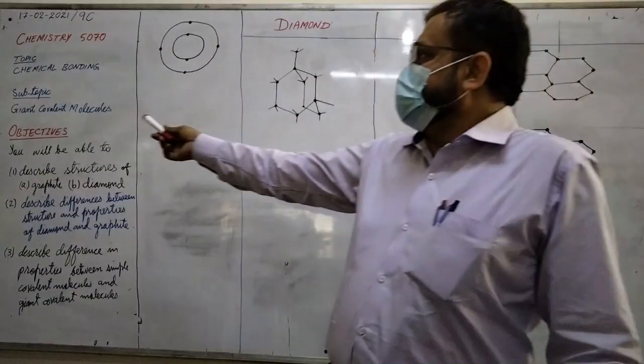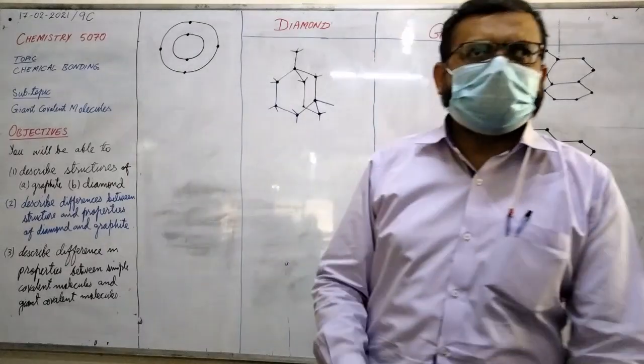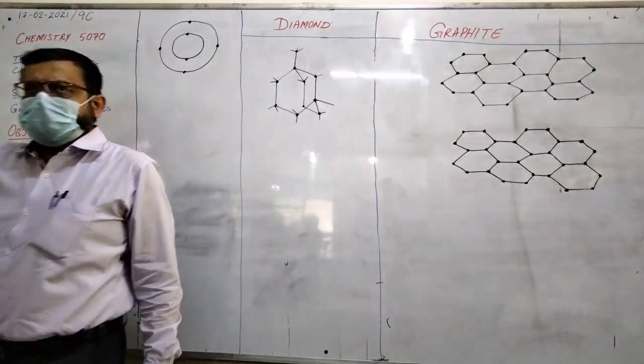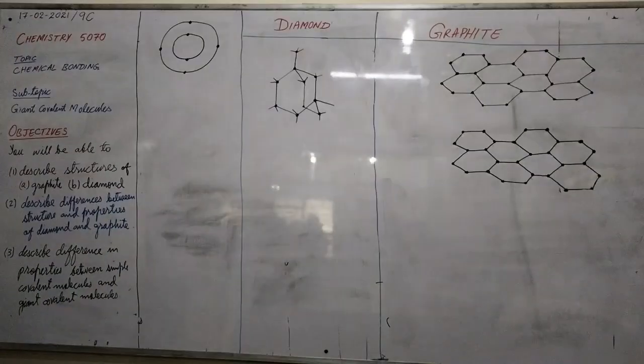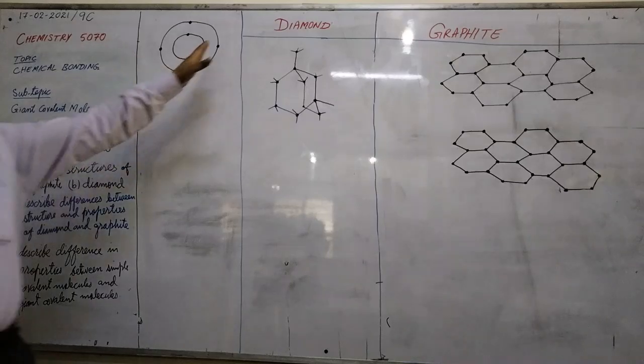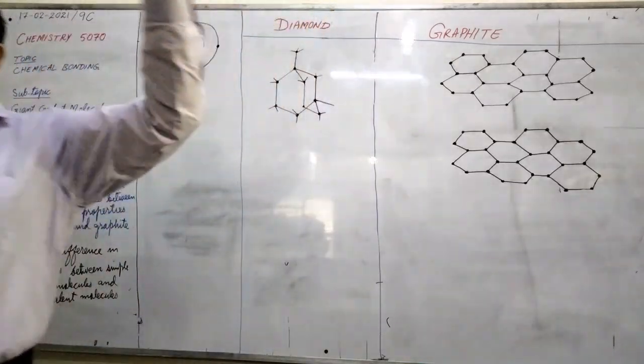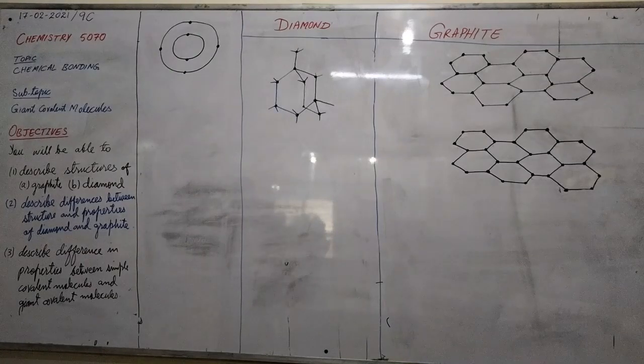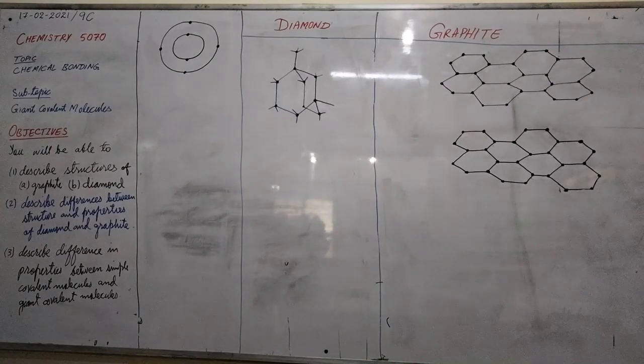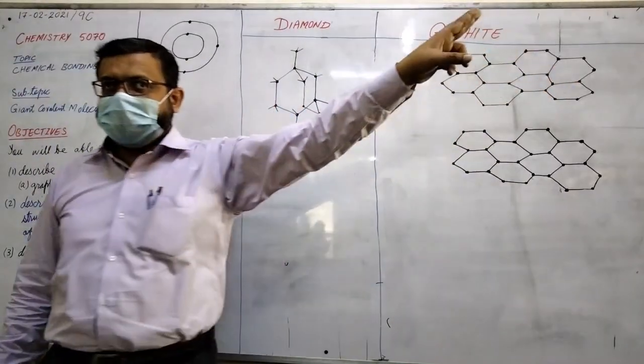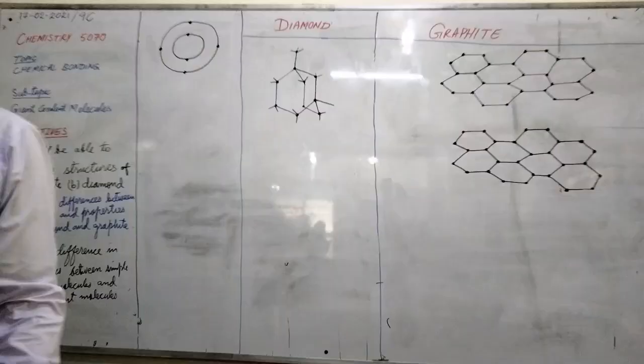Today our topic is Giant Covalent Molecules, and the subtopic is Giant Covalent Molecules. Our main topic is Covalent Bonding, as we are learning since two weeks. In Giant Covalent Molecules we have three examples: Diamond, Graphite, and Silicon Dioxide. But right now I have given only two things: Diamond and Graphite.